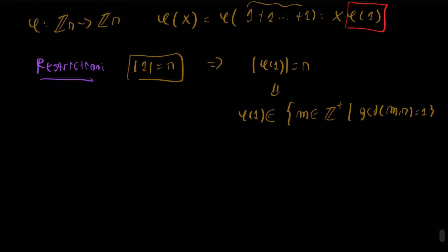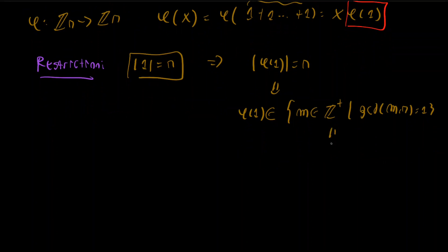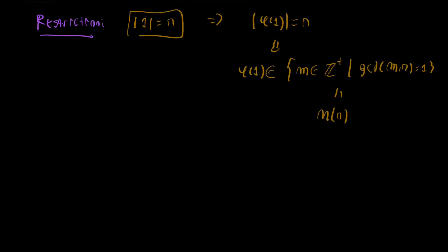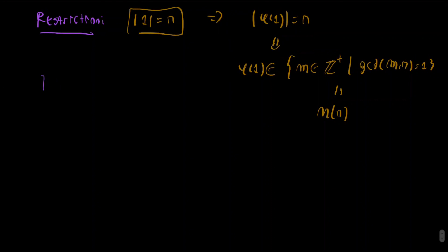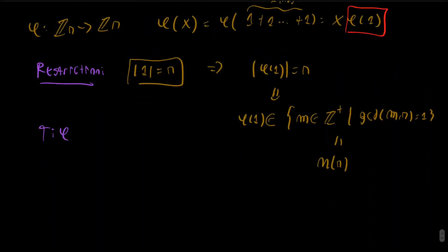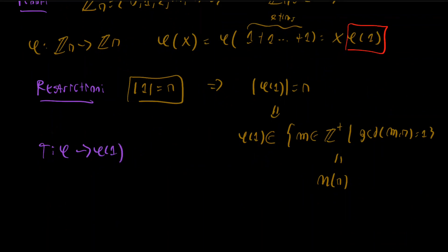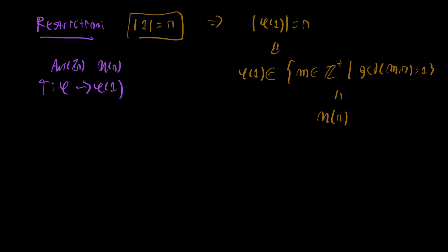We now construct our isomorphism T: Aut(ℤₙ) → U(n) by mapping an automorphism φ to φ(1). We need to show T is an isomorphism. For injectivity: if φ(1) = φ̃(1), then since every element x can be written as x·1, we get φ(x) = x·φ(1) = x·φ̃(1) = φ̃(x) for all x ∈ ℤₙ, so φ = φ̃.